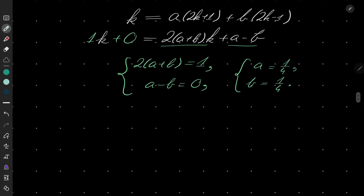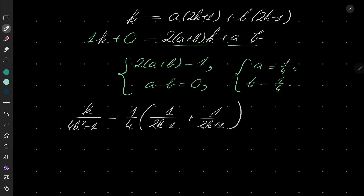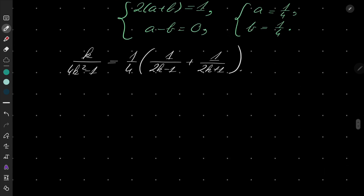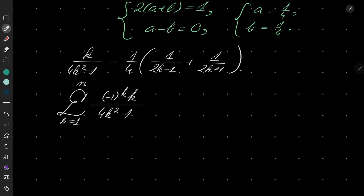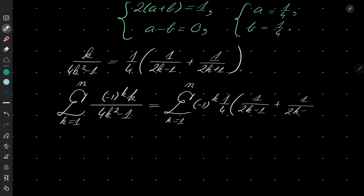So it must be the case that 2(a plus b) equals 1 and a minus b equals 0, from which both a and b must equal one quarter. So we now know that k over (4k squared minus 1) equals one quarter times (1 over (2k minus 1) plus 1 over (2k plus 1)), and that will be useful. Let's go back to our sum.